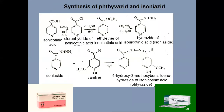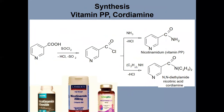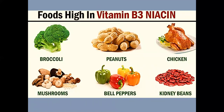You can see the scheme of synthesis of medications ftivazid and isoniazid. Piperidine chemical properties: reactions of acetylation and mesylation. You can see the scheme of synthesis of Vitamin PP and nicotinamide. Food source in Vitamin B3, or niacin.